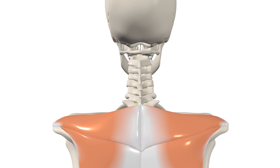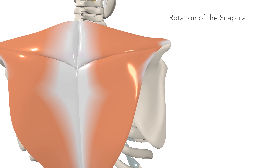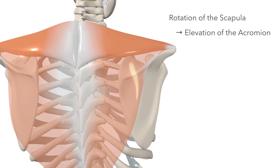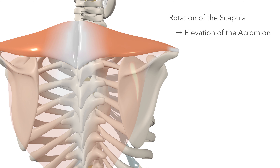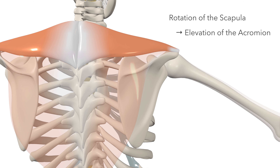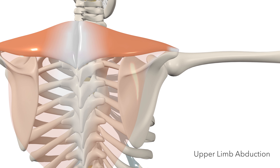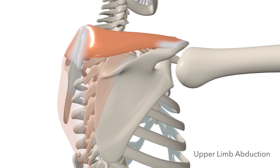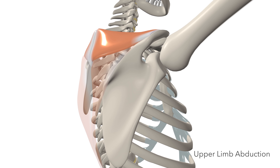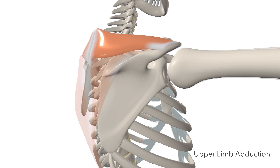The middle and lower fibres of the trapezius rotate the scapula, causing elevation of the acromion. This assists in abduction of the upper limb, allowing the upper limb to abduct beyond 90 degrees, until which point the scapula is fixed.